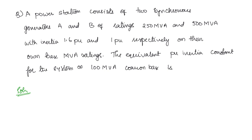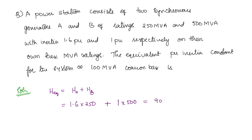Since it is not stated whether the machines are coherent or non-coherent, we take them as coherent. For coherent machines, the equivalent inertia constant is just the addition of individual inertia constants. The inertia constants are given in per unit with their base ratings. The actual value is: (1.6 × 250) + (1 × 500) = 400 + 500 = 900 MVA.